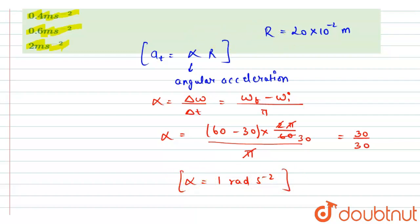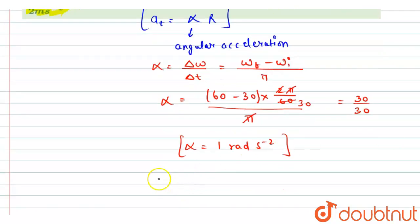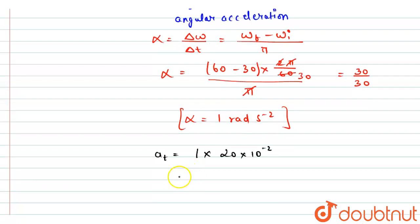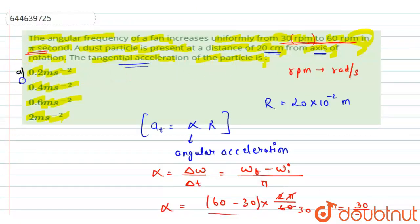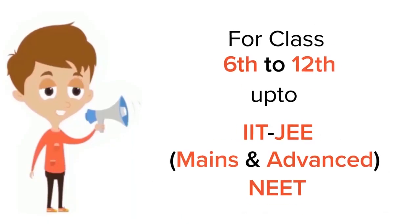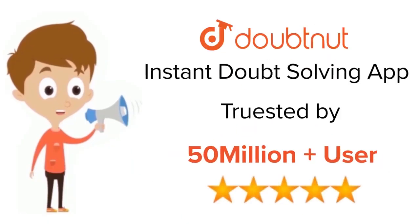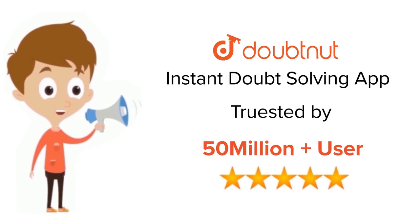Now we have both alpha and r, and we can put them into the equation. The tangential acceleration a_t equals alpha times r, which is 1 times 20 × 10⁻², giving a_t = 0.2 meter per second squared. This is the final answer — option A is correct. For class 6 to 12, IIT-JEE and NEET level, trusted by more than 5 crore students, download Doubtnut today.